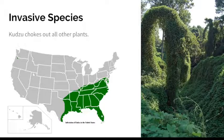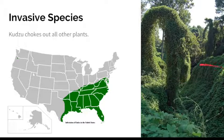Another example of a change caused by humans is invasive species. Because humans travel all over the world, we end up taking organisms with us — sometimes on purpose, other times by accident. But the organisms that travel with us can have profound impacts in the new ecosystem where they live. This picture is an example of a plant called kudzu. It originally evolved in Japan and was transported to various places around the world on purpose because we liked the way it looked in our gardens. However, when it was introduced into new ecosystems, it thrived, killing most of the plants.